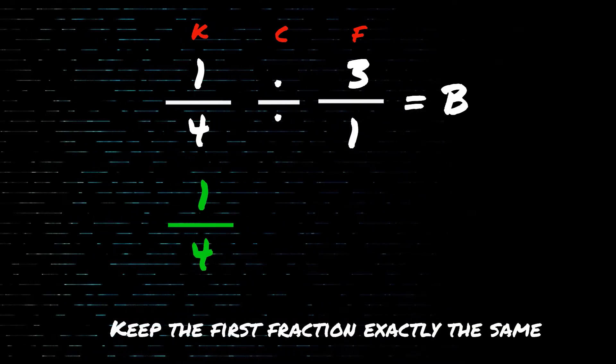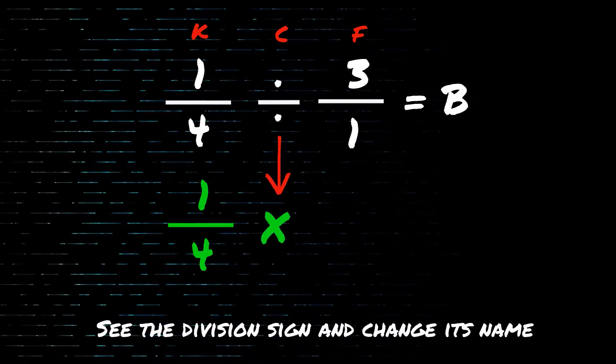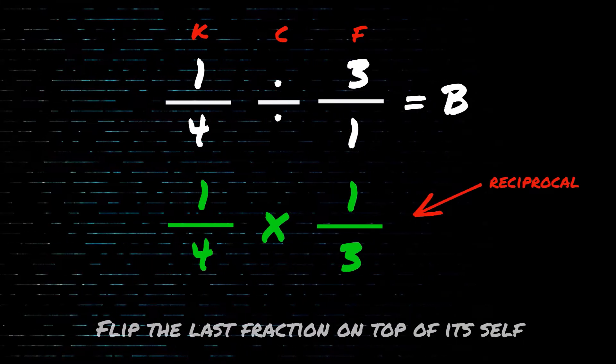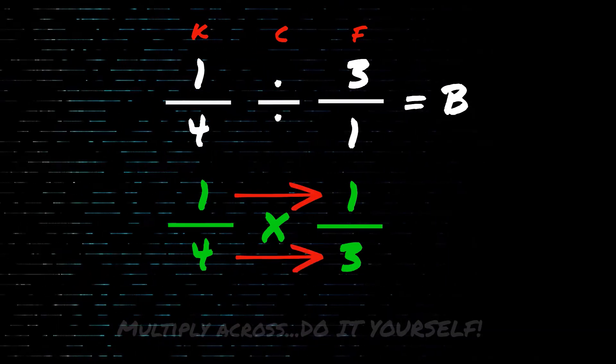Keep the first fraction exactly the same. See the division sign and change its name. Flip the last fraction on top of itself. Now multiply across, do it yourself.